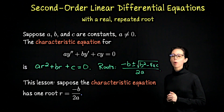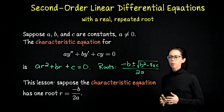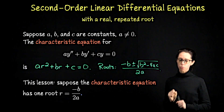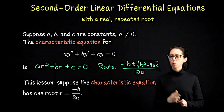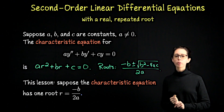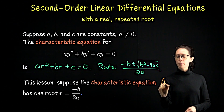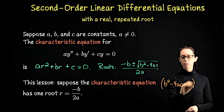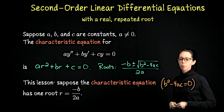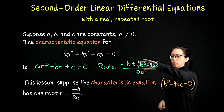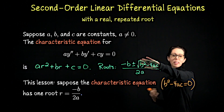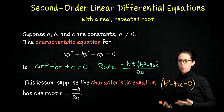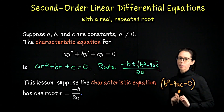In this video, we consider the case where we don't have two distinct roots. Rather, we have one repeated root. That happens whenever the discriminant inside the square root is zero. If B² − 4AC = 0, then the numerator becomes ± 0, so both roots are of the form negative B divided by 2A — just one real repeated root.